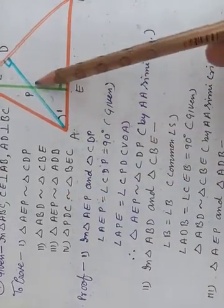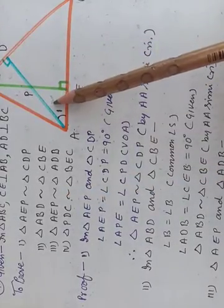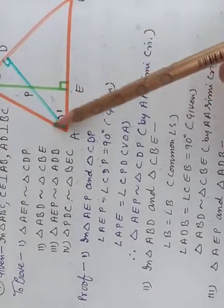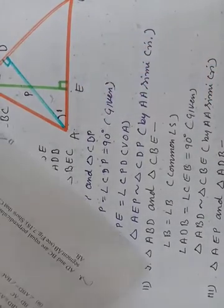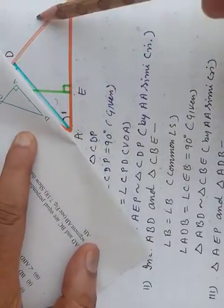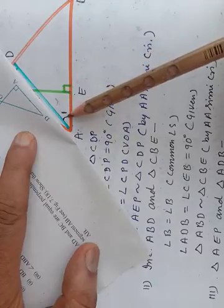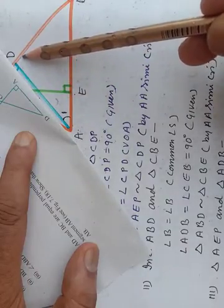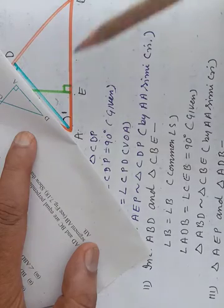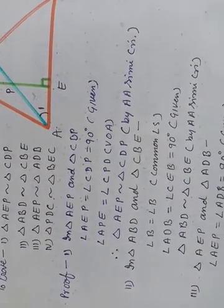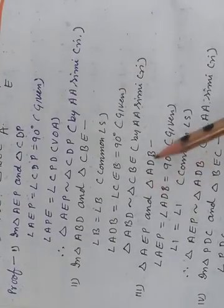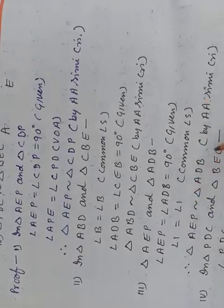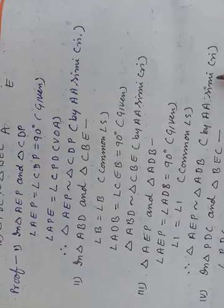Now again, we check triangle AEP — the small one already marked — and triangle ADB, the whole triangle. Angle 1 is common to both triangles: angle 1 = angle 1 (common). Also, one angle in AEP is 90 degrees from the perpendicular CE, and the blue color line AD is also perpendicular giving 90 degrees in ADB. So these two triangles are similar by the Angle-Angle similarity criterion.